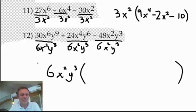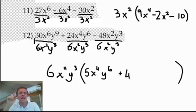Big parenthesis. Let's see what's left. Right, here we go. 30 divided by 6 is 5. X^6 over x^2. 6 take away 2 is 4. So, x to the 4th. Y^9 over y^3. 9 take away 3, y^6. Okay, that's the first one done. What's the sign in between? A plus. 24 divided by 6 is 4. x^4 over x^2. Subtract the exponents. 4 take away 2 is x squared. And then, y^6 over y^3. 6 take away 3 is 3. So that's y cubed. Okay, there you go. That's the next one.